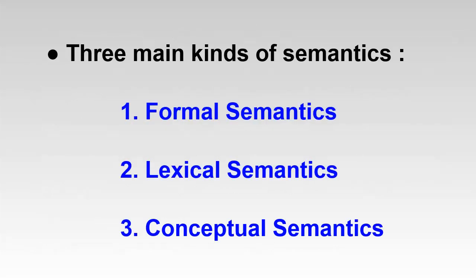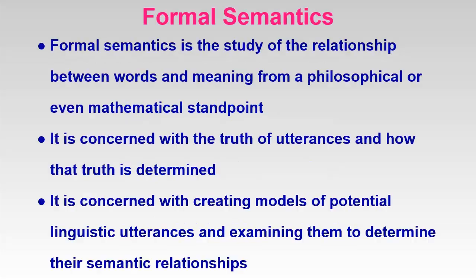Now let's see the kinds of semantics. There are three main kinds of semantics: formal semantics, lexical semantics and conceptual semantics. Now let's see them one by one.